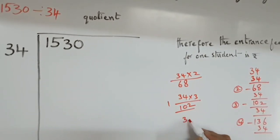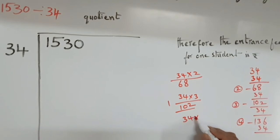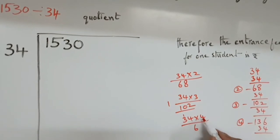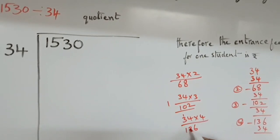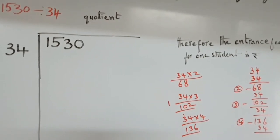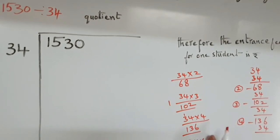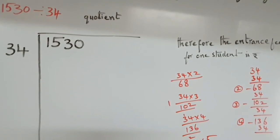Again. 4. 4 fours are 16. 1. 4 threes are 12. Plus 13. Again. 5. 5 fours are 20. 5 threes are 15. Plus 17.